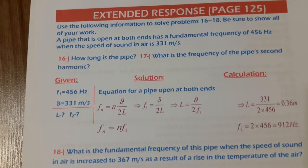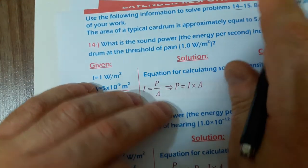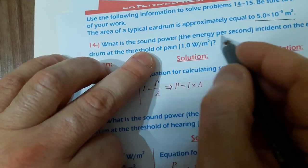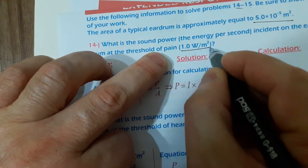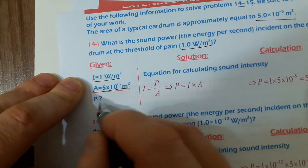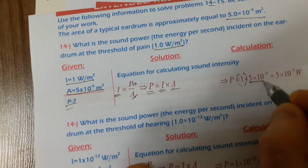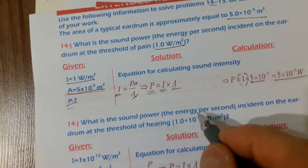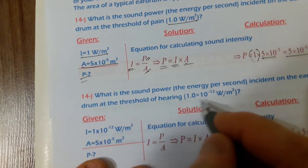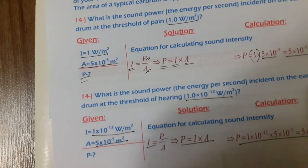Extended response, questions 14 and 15. The area of a typical eardrum is approximately 5 × 10⁻⁵ m². Using intensity = power/area, power = intensity × area. At the threshold of pain (1 W/m²): power = 1 × 5 × 10⁻⁵ = 5 × 10⁻⁵ W. At the threshold of hearing (10⁻¹² W/m²): power = 10⁻¹² × 5 × 10⁻⁵ = 5 × 10⁻¹⁷ W.